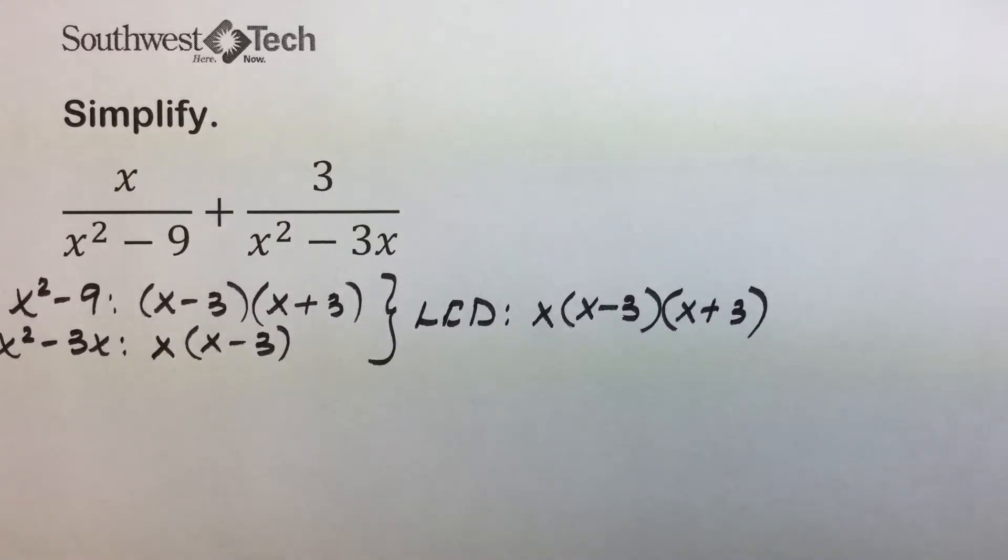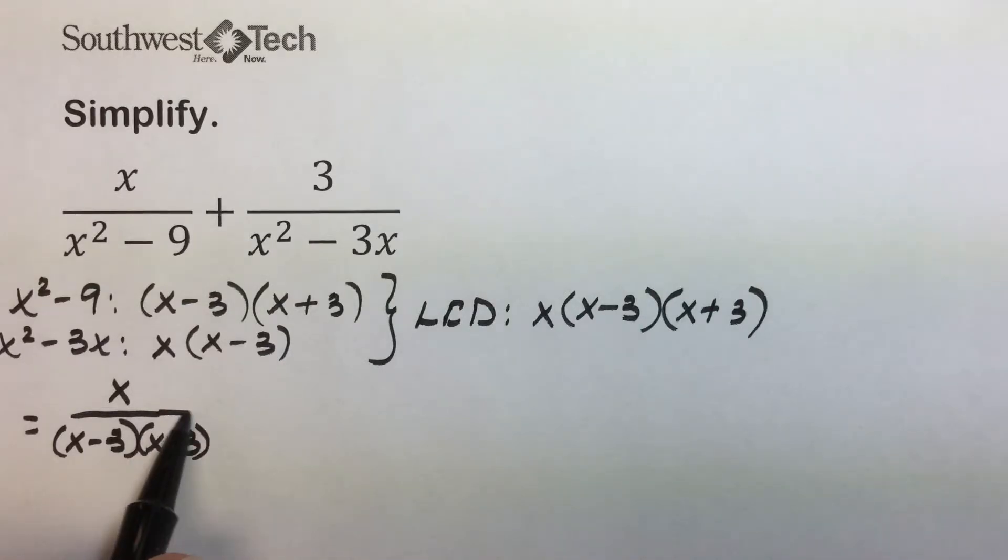We'll now work with each of these rational expressions to determine an equivalent expression that has that least common denominator in it. For the first one, I'll replace the original denominator with its factored form, x minus 3x plus 3. The only factor it's missing of the least common denominator is x. Putting x over x is the same as multiplying by 1.